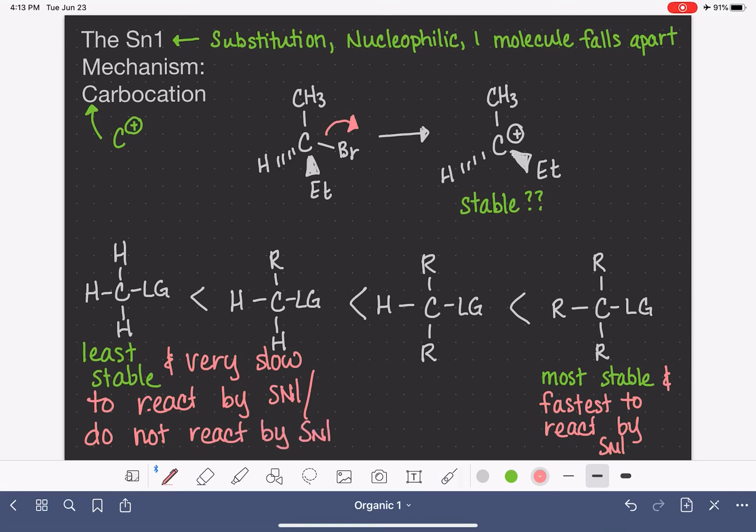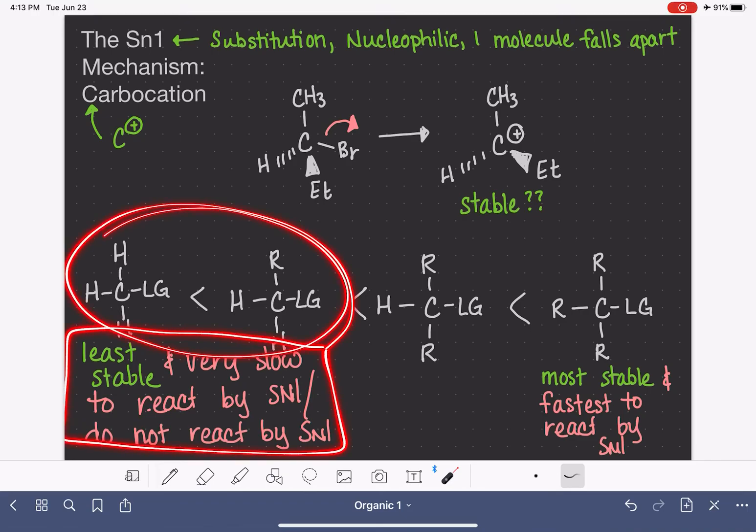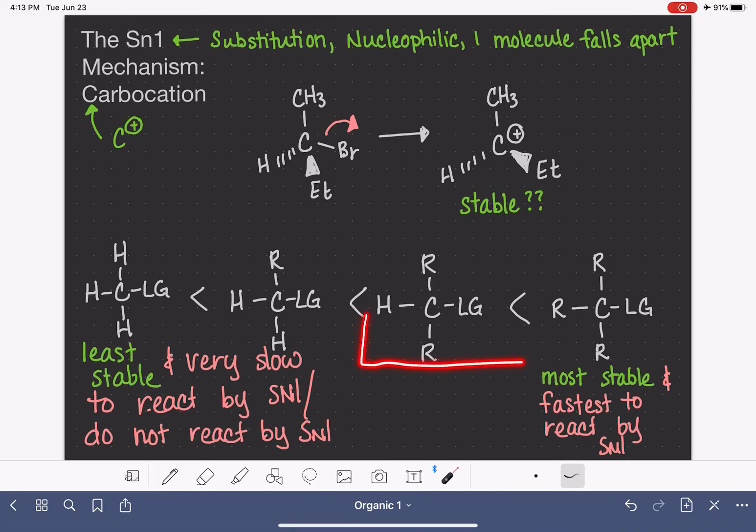And because they react so slowly, we oftentimes just generalize that to say that they do not react by SN1. And this statement applies to both of these types of molecules. So we only have secondary and tertiary molecules that are capable of doing the SN1 reaction. And we do not see the reaction taking place for methyl or primary molecules.